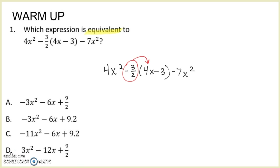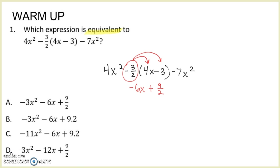I know that I'm going to have to distribute this negative 3 halves. So negative 3 halves multiplied by 4x is going to be negative 6x — take the negative 3 halves times the 4, you should get negative 6, and then bring your x down. And then negative 3 halves times negative 3: a negative times a negative is going to be a positive, and that should be 9 halves. Multiply that in your calculator just to confirm.